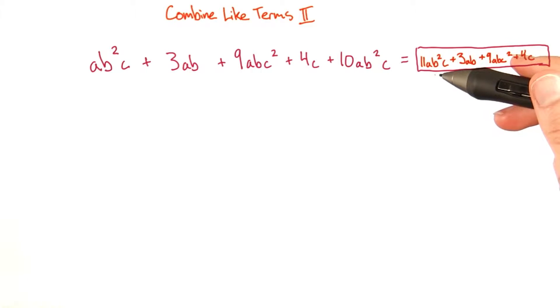The answer is 11ab squared c plus 3ab plus 9abc squared plus 4c. We can simplify this the same way that we did in the previous example. Let's find all the like terms and combine them.